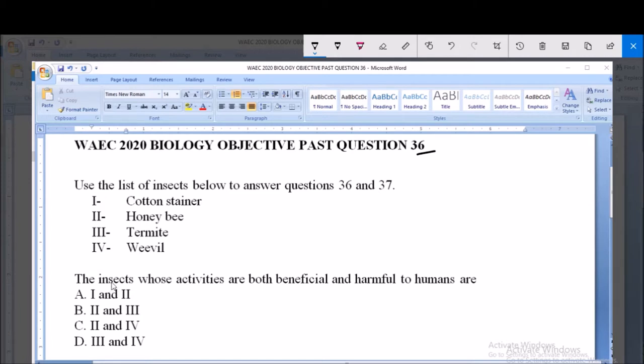Now, question 36: the insects whose activities are both beneficial and harmful to humans are A) 1 and 2, B) 2 and 3, C) 2 and 4, D) 3 and 4.